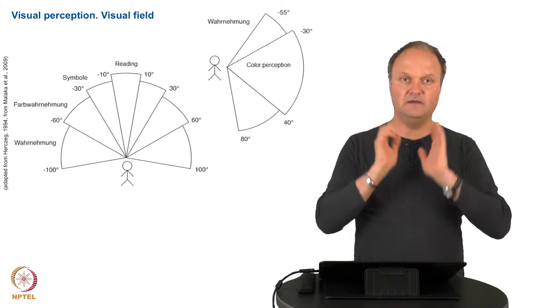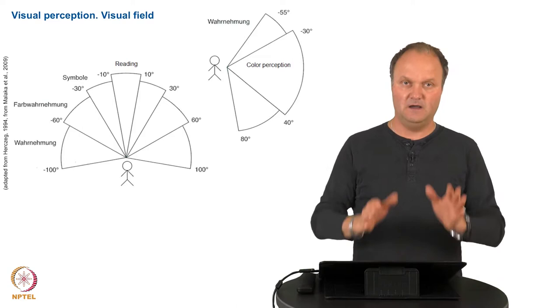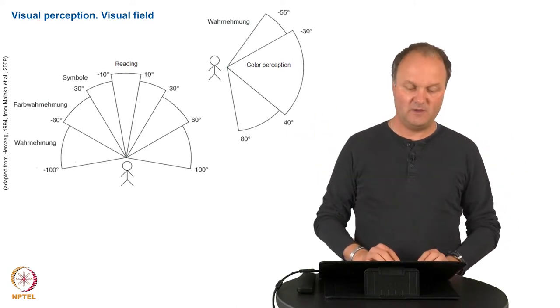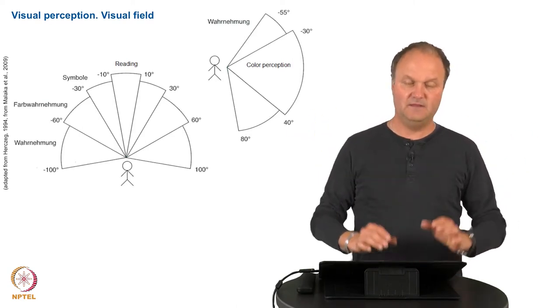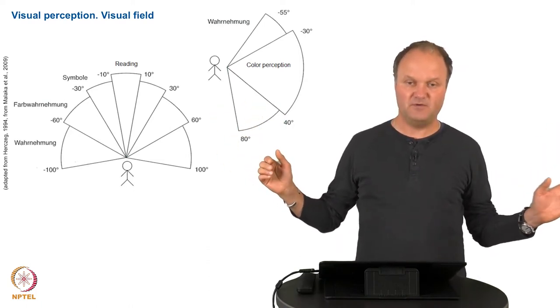Then an area a little bit outside, plus minus thirty degrees, where we can still recognize symbols. An area even more outside, where we can recognize colors. And then a general outside area, where we can recognize that something is happening.